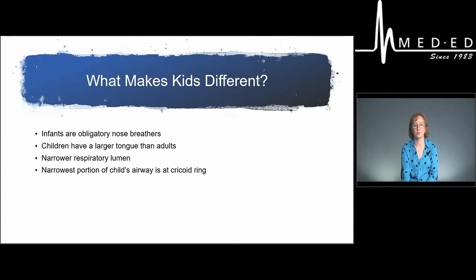They have a proportionally larger tongue than adults, so the tongue becomes an easy airway obstruction issue. If the child is somnolent or has an altered level of consciousness, it's easy for the tongue to fall back and occlude the airway. They have a narrow respiratory lumen, so it takes much less to occlude their airway. The narrowest portion of the child's airway is at the cricoid ring.